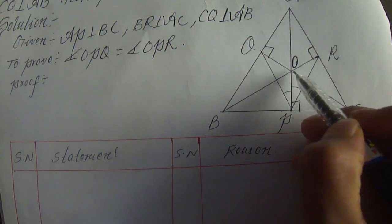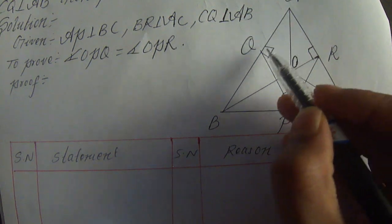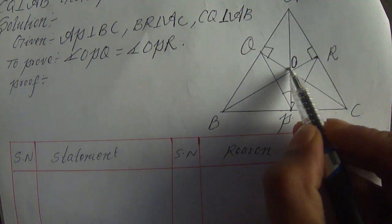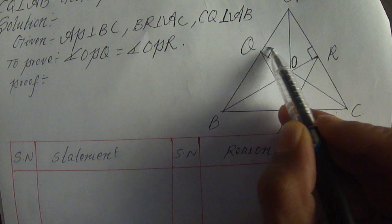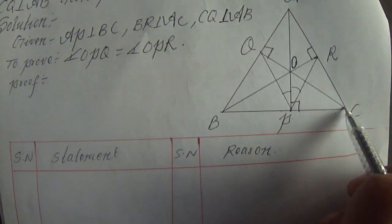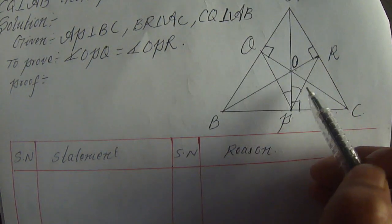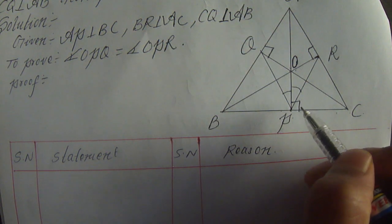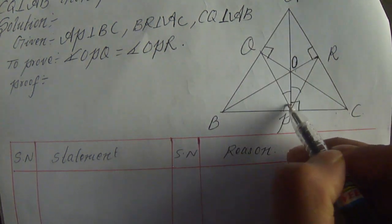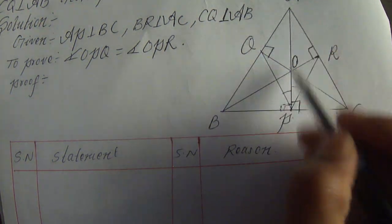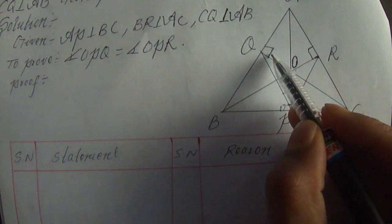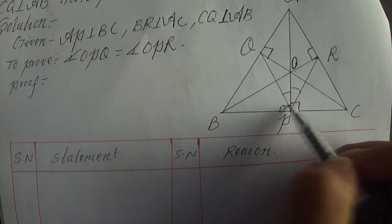Angle QOP — for this cyclic quad, we need to prove it. OQBP is a cyclic quadrilateral because the exterior angle equals 90 degrees. Angle AQC is 90 degrees, so angle AQO is less than angle AQC which is 90 degrees. Angle APB is also 90 degrees. Therefore angle APB is equal to angle AQO, so OQBP is a cyclic quad.